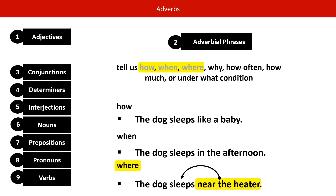So let's look at why: the dog sleeps because he is tired. How often: the dog sleeps twice a day. How much: the dog sleeps for three hours. Under what condition: the dog sleeps if it is raining. Hopefully now you're starting to get a feel for how adverbs work.